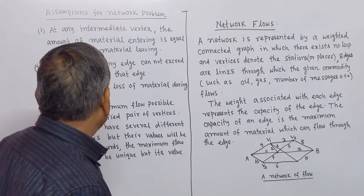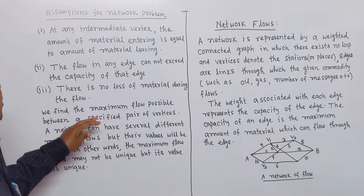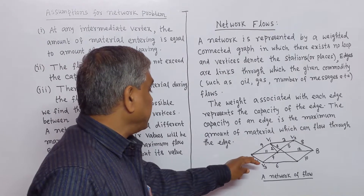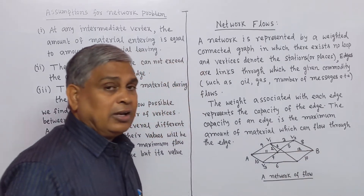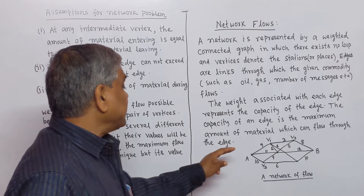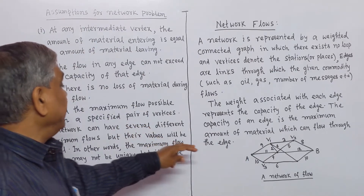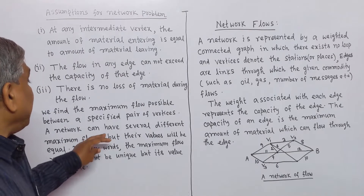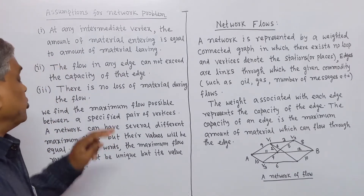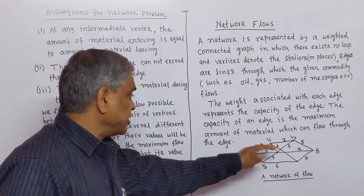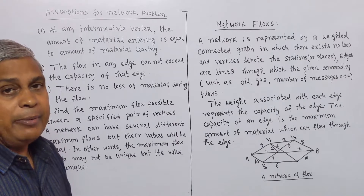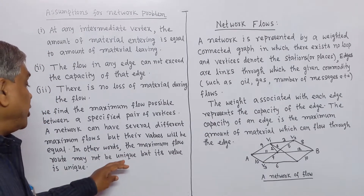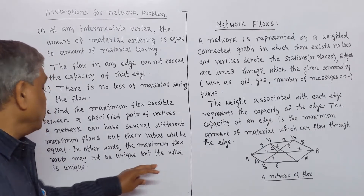These are the assumptions. We find the maximum flow possible between a specified pair of vertices — for example, between vertex A and vertex B. A network can have several different maximum flows because we have different paths, so we may find different maximum flows. The route of the maximum flow may not be unique, but its value is unique.